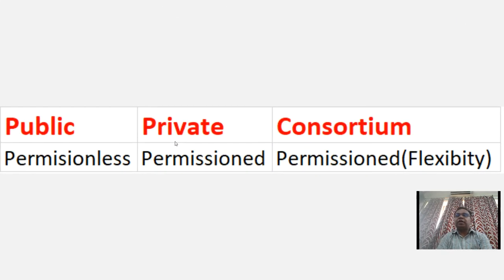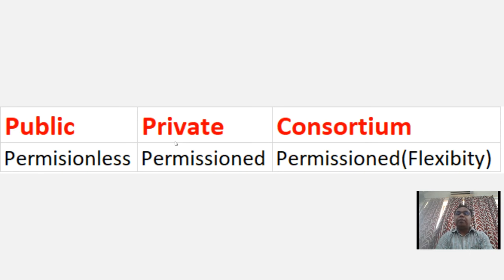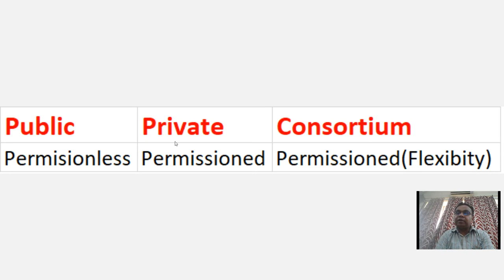As you can see on the screen, a public platform is permissionless, private is permissioned, and consortium is also permissioned but with a little amount of flexibility. In a public blockchain platform, no permissions are required — it is a permissionless platform. Anyone can join, anyone can read, anyone can write, and even participate in the consensus mechanism algorithm.